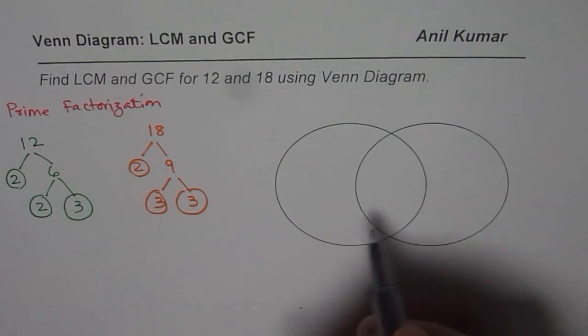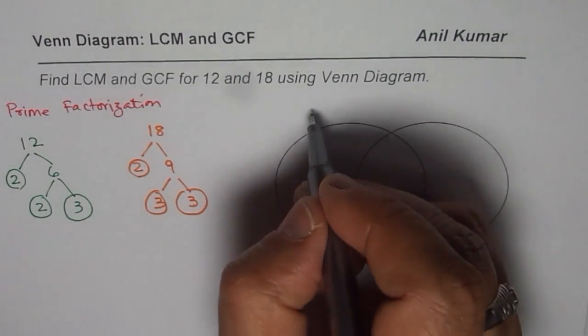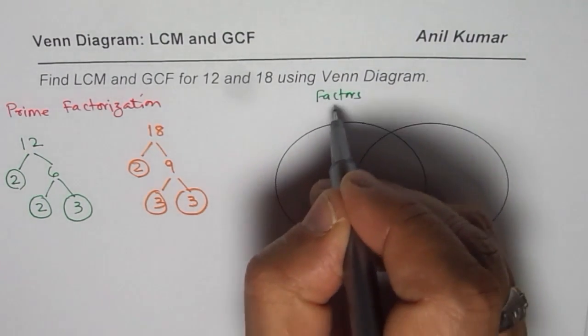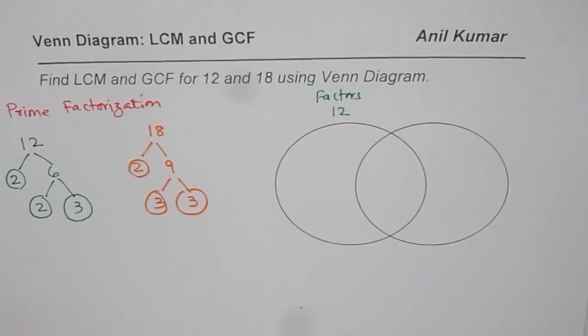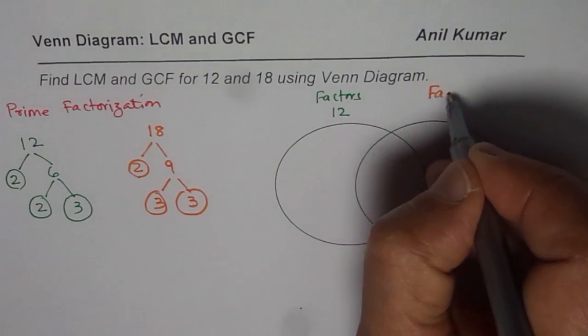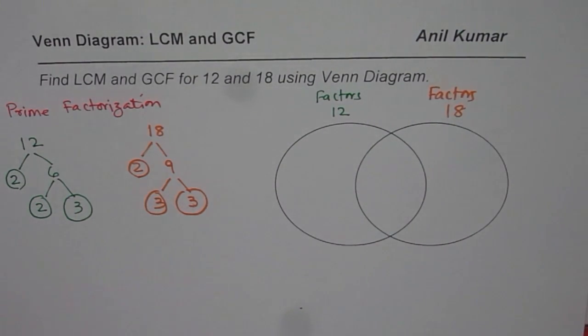So now we will use the Venn Diagram. We have two circles here. In the first circle we will put factors of 12, in green. In the other one we will put factors of 18. Now in between what is going to go? Of course the common factors will go in the center.